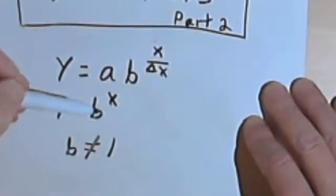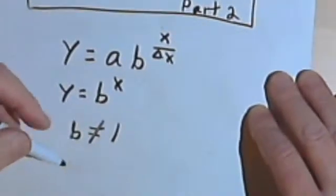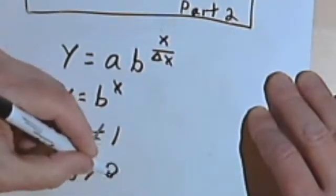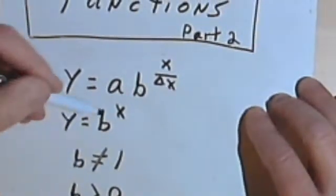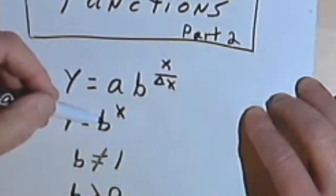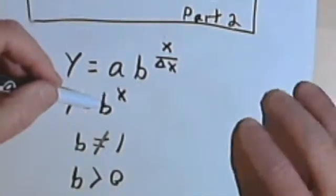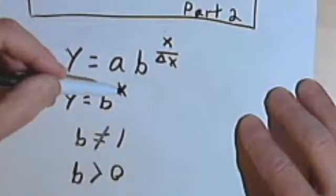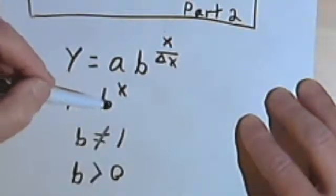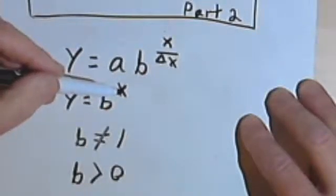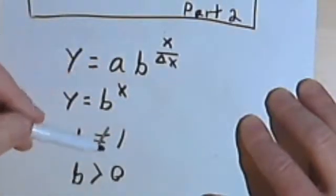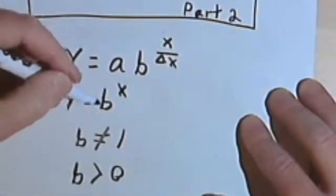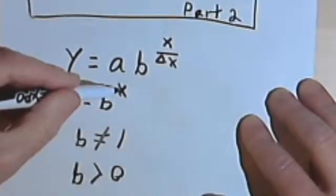The other thing is, I want b to be greater than zero. In other words, not only shouldn't it equal zero, but it has to be greater than zero. And here's why. Let's say that b is negative 2. Well, when b is negative 2 and I've got an even exponent, like 2 or 4 or 6, I'm going to have a positive result. If b is negative 2 and I've got an odd exponent, like 1 or 3 or 5, I've got a negative result. So this thing would bounce all over the place. It's just not going to work, and certainly not going to work if I have rational exponents.